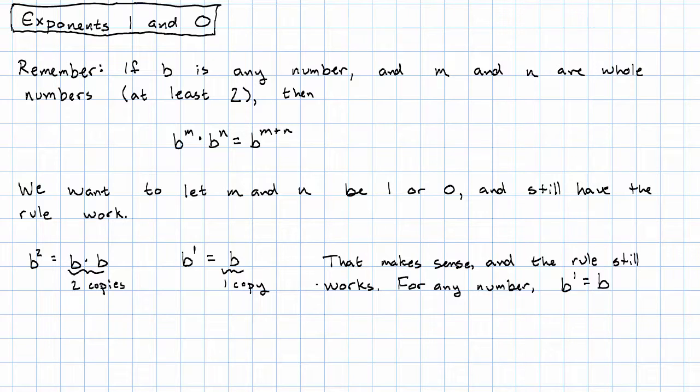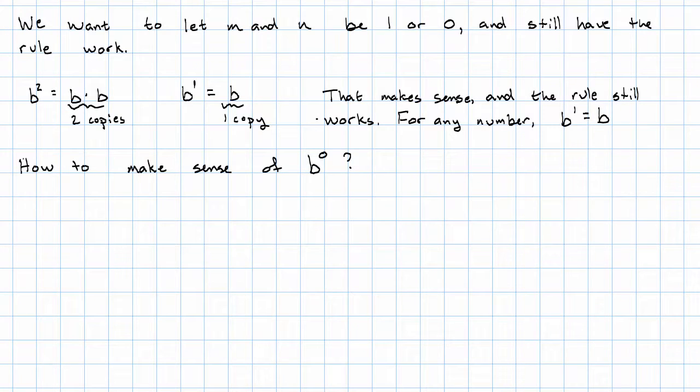What about exponent zero though? Well, remember that we want to continue to follow the exponent rules. So we want to have b to whatever power times b to the zero to say, well, that's b to the m plus zero. But that's just b to the m.